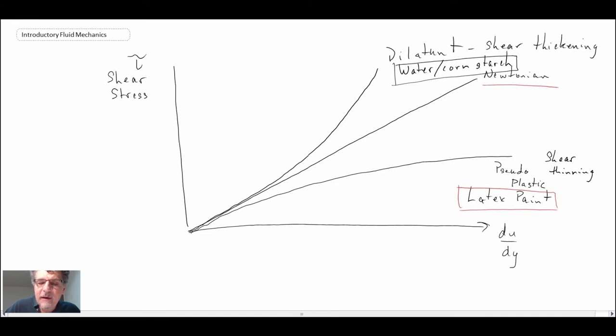But in the room state, if it's just sitting there, toothpaste doesn't move. And so toothpaste requires a certain amount of shear stress before it begins to flow. And that is what we call a Bingham plastic. The attribute of a Bingham plastic is that you need to apply a certain shear stress before it begins to flow. And you would call that the yield stress.